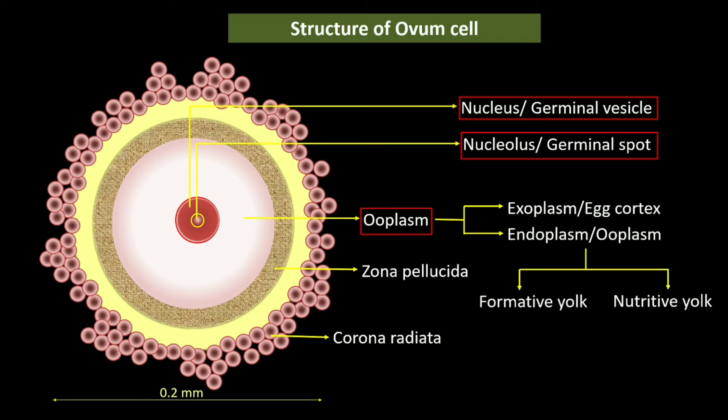Ooplasm, or yolk, is composed of formative yolk and nutritive yolk. Formative yolk is the ordinary cytoplasm of the cell, while nutritive yolk contains numerous fatty acid granules and proteinous substances. The human ovum has very little nutritive yolk, which nourishes the embryo in its early development. Therefore, the human ovum is microlecithal, as it contains very little yolk.